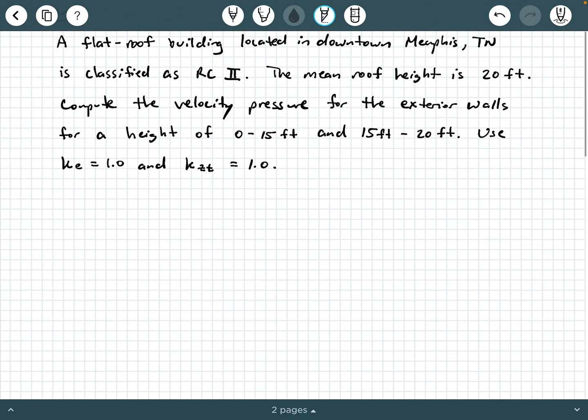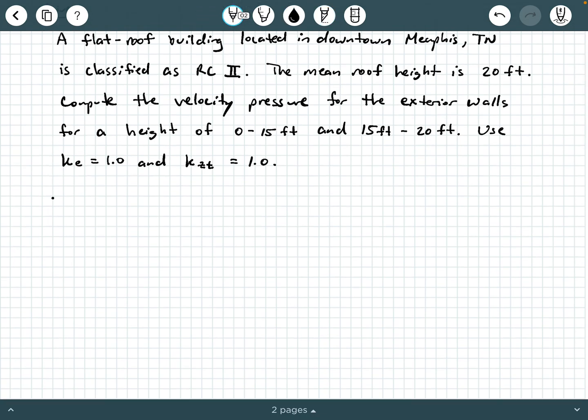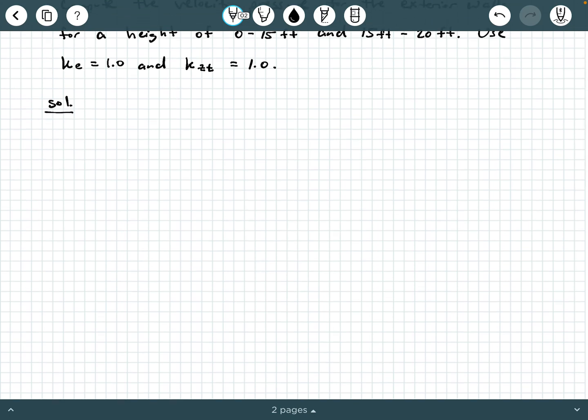So let's go ahead and get started. The first thing I like to do whenever I don't have a figure, I like to draw things out to help me visualize it a little bit better. We don't have a whole lot of information about this building other than it has a flat roof and the mean roof height is 20 feet. So this is about all we know, and so that's H is 20 feet, and because it's flat, we know that the roof angle is about 0 degrees.